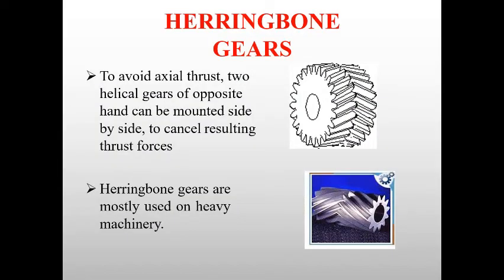Next is herringbone gear. To avoid the axial thrust, two helical gears of opposite hand can be mounted side by side to cancel the resulting thrust force. Herringbone gears are mostly used on heavy machinery to carry more load. The disadvantage of herringbone gear is it is complicated to design and it will be costly.